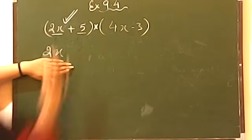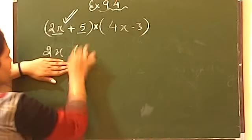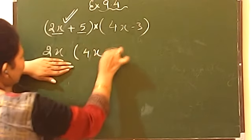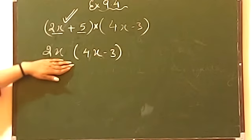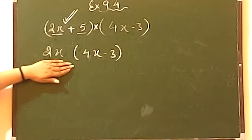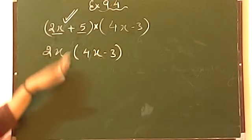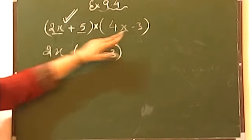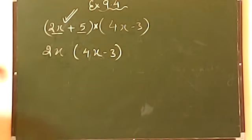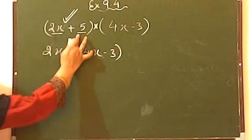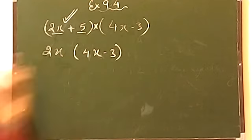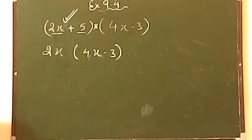So this 2x, first this 2x will get multiplied with this entire term that is 4x minus 3. One by one we will multiply. So this 2x will get multiply by 4x minus 3 in one step. Then you will take the second term. Second term was what? Including sign.